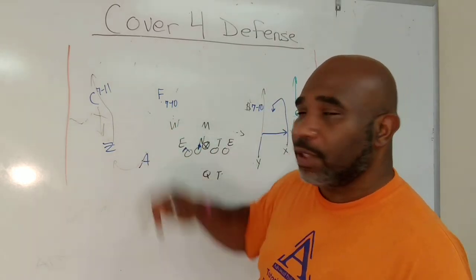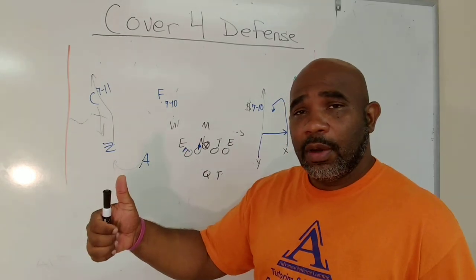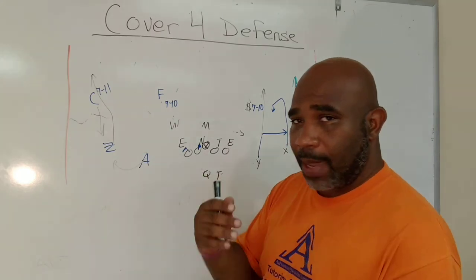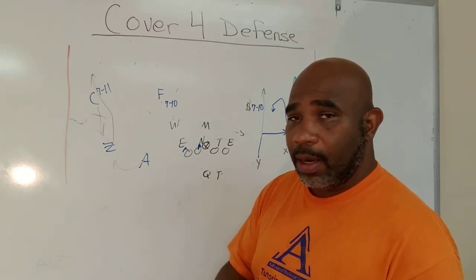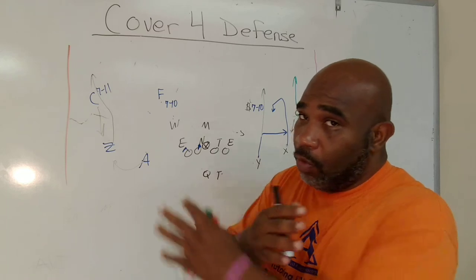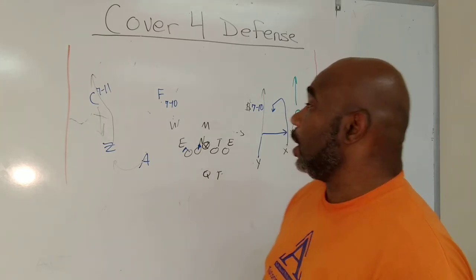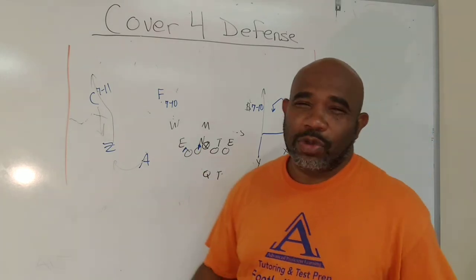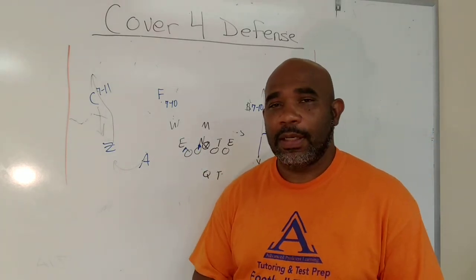When you do run it, you have to decide where am I declaring vertical? How am I going to defend the deep rub routes? Because man everywhere he goes, or man on the deep, those deep rub routes can get you. And again, two-read coverage, also known as trap coverage. Again, we'll talk about that later.